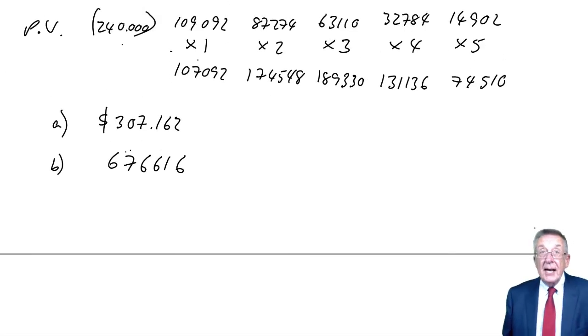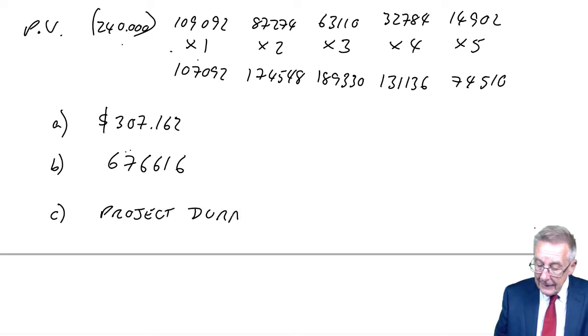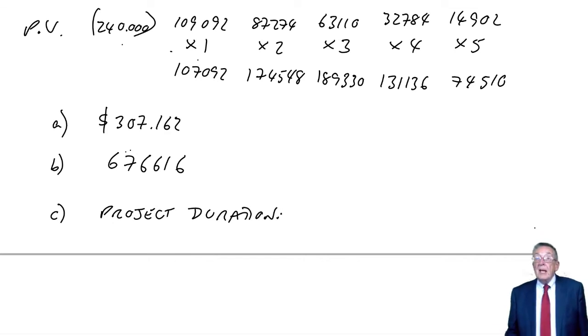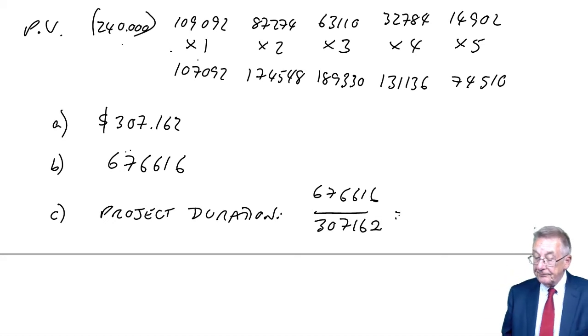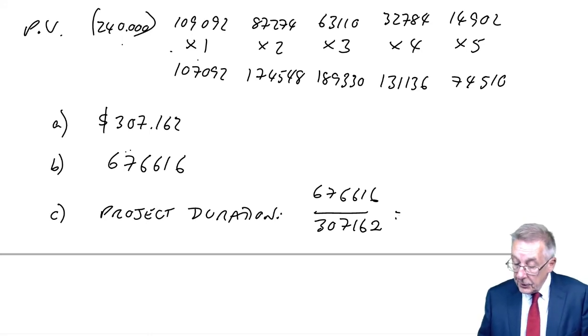And the final step, just as with the Macaulay duration, which was for bonds, what we call the project duration. We divide B by A. So, 676,616 divided by 307,162. I get 2.20 years.